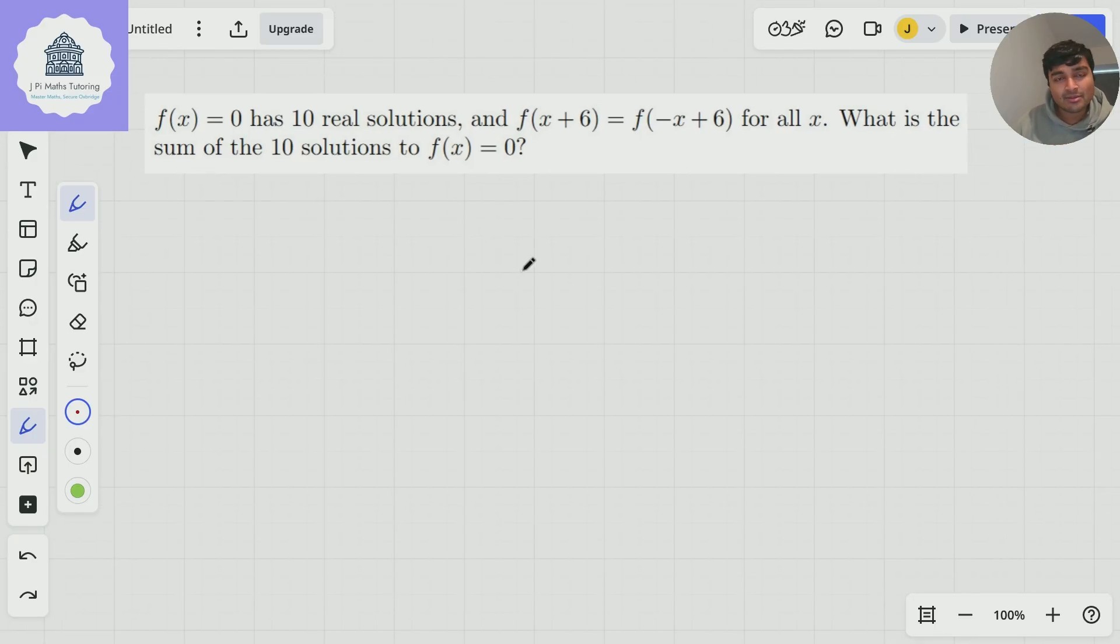Anyway, let's have a go at this problem. So what's the trick to this? Well, it's to notice this equation here. This equation tells us that this graph has symmetry. Why is that?